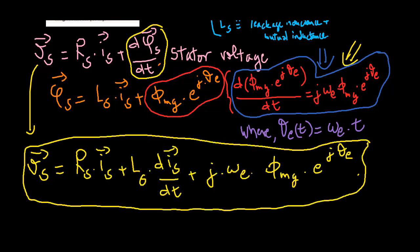This is the fundamental equation that governs the relationship between the current and voltage of PMSM in a space vector form, based on which the dynamic models will be obtained.